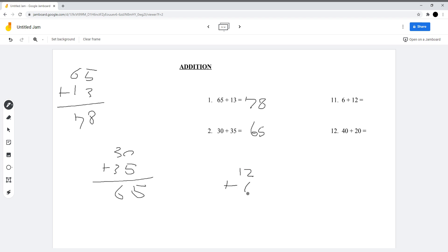12 plus 6: 2 plus 6 is 8, and 1, so 18 for this question. 40 plus 20: 0 plus 0 is 0, and 4 plus 2 is 6. Answer is 60.